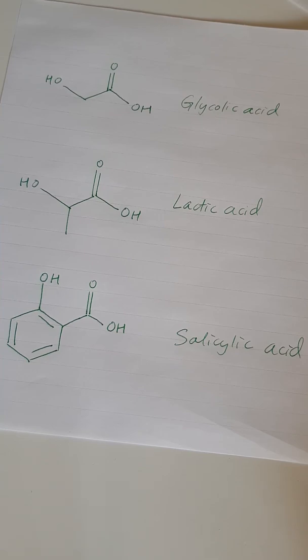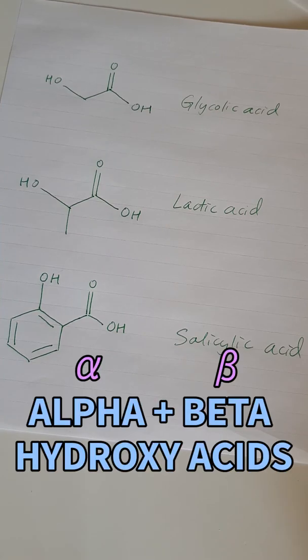I thought I'd do another chemistry lesson today and it is on alpha and beta hydroxy acids. So alpha and beta hydroxy acids are both obviously hydroxy acids, but what does the alpha and the beta mean?